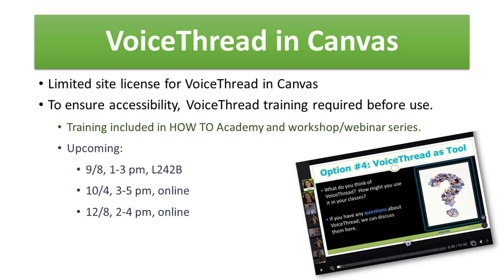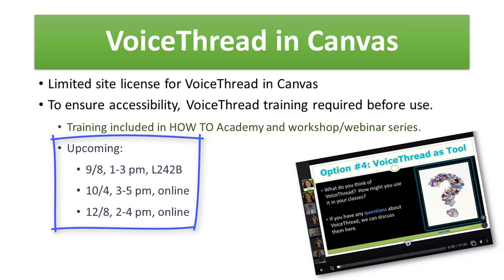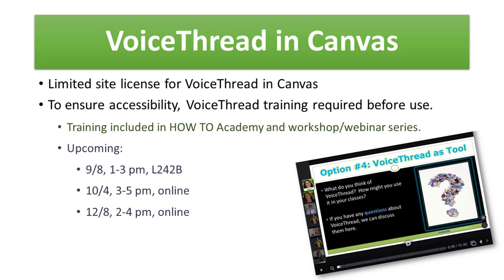If you missed the training we did earlier this month, we have several coming up: one in September, one in October, and one in December. The training is two hours — one is face-to-face, two are online. During that time you'll learn how to use VoiceThread in Canvas, how to create an assignment for VoiceThread in Canvas, what it looks like to grade a VoiceThread, and how to set up your VoiceThread for accessibility. It also gives you entrance into a VoiceThread resource shell in Canvas with lots of materials, examples, and sample PowerPoint templates you could use to create your central images — like the example shown here, which was actually made with PowerPoint. So lots of good stuff, and it all starts with the training.